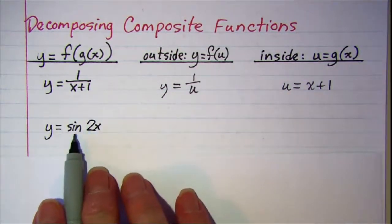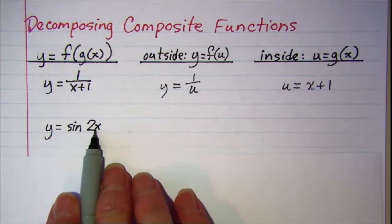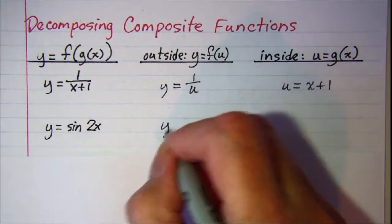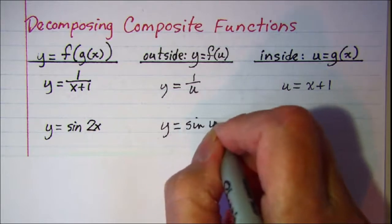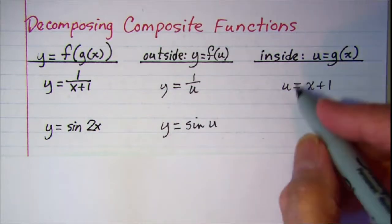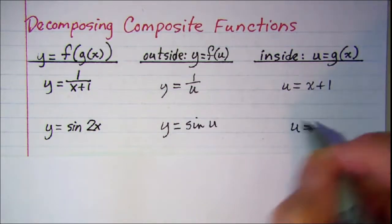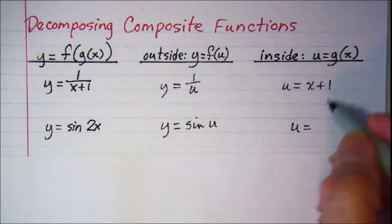For this next one we have the sine of something, so we have y equals sine u as our outside function, and then u is this argument 2x.